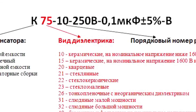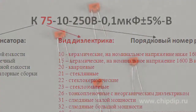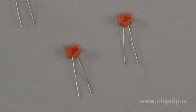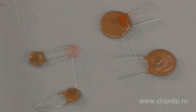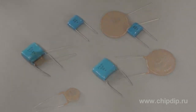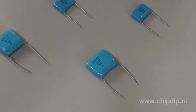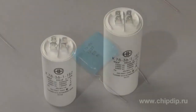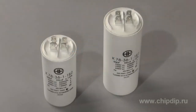The second element is a number which defines the type of dielectric used. For example, 10 is a ceramic capacitor for rated voltage below 1600 volts; 15 is a ceramic capacitor for rated voltage of 1600 volts and above; 73 is a polyethylene terephthalate capacitor with metalized plates; and 78 is a polypropylene capacitor.